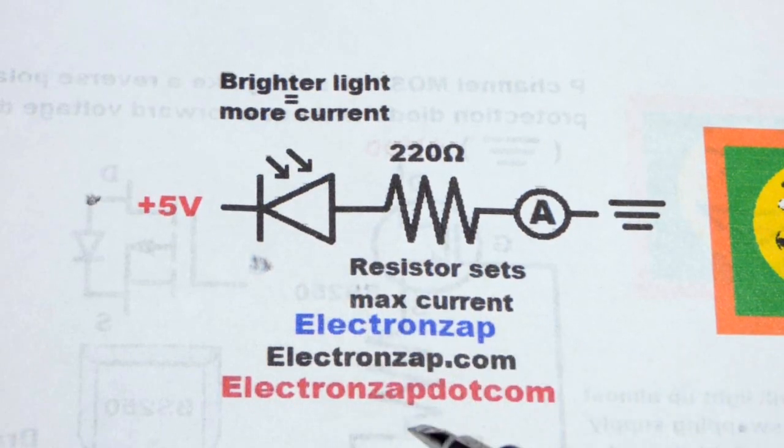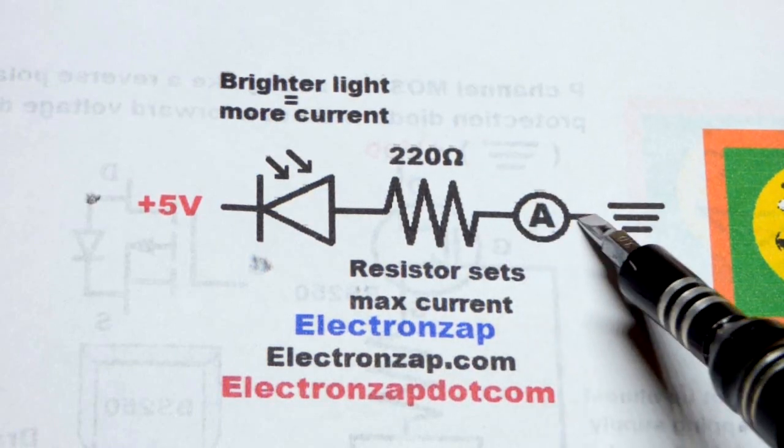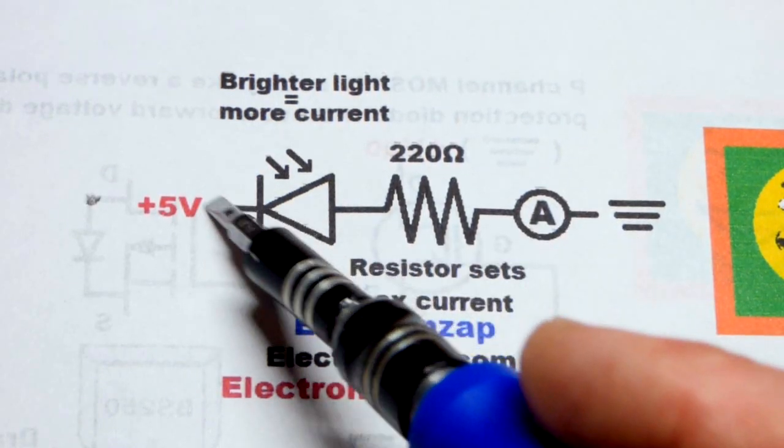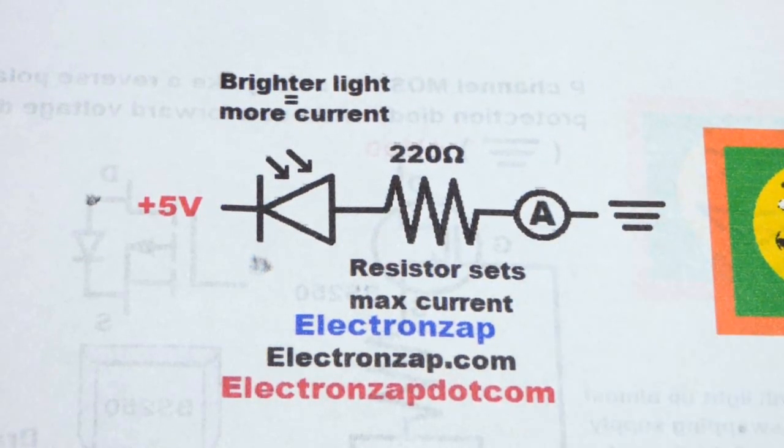I don't think I've ever burnt one out though. But in any case, we also have a multimeter in series with it because when you have series components, they have the same amount of current going through them. So you got to put the meter in series and we will look at how much current we're getting.